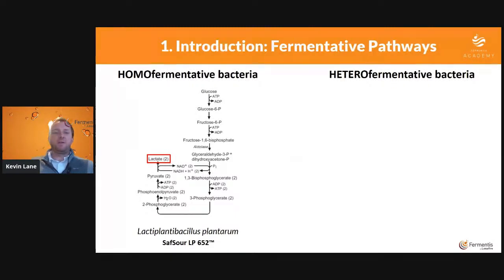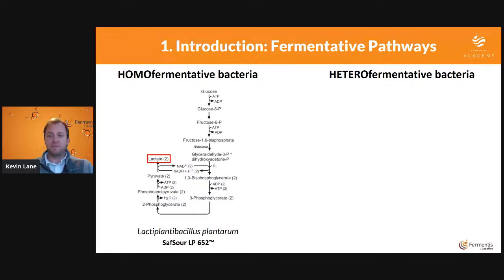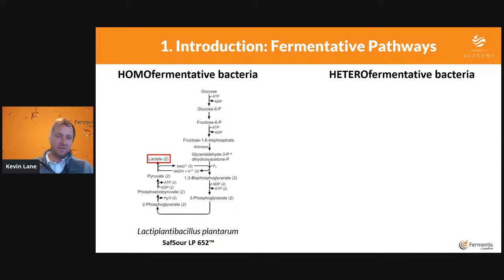Today we're specifically going to talk about two different types of bacteria for this kettle souring process. The first is Lactiplantibacillus plantarum — Fermentis has a product called SafSour LP652, which is a plantarum. The plantarum is a homofermentative bacteria: it takes one glucose and converts it to two lactate — two lactic acid molecules after lactic fermentation.